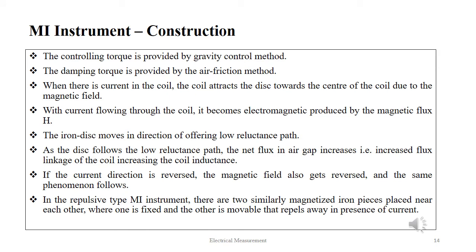The controlling torque is provided by the gravity control method and the damping torque is provided by the air friction method. When there is current in the coil, the coil attracts the disc towards the centre due to the magnetic field, becoming an electromagnet produced by the magnetic flux H. The iron disc moves in the direction offering a low reluctance path, increasing the net flux in the air gap and increasing the coil inductance. If the current direction is reversed, the magnetic field also gets reversed and the same phenomenon follows. In the repulsion type MI instrument, there are two similarly magnetized iron pieces placed near each other — one fixed and one movable — that repels away in the presence of current.